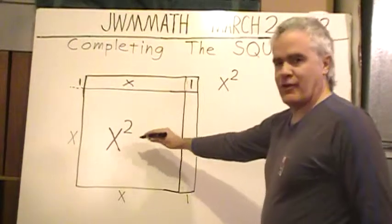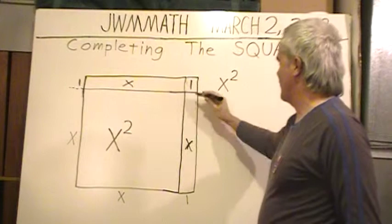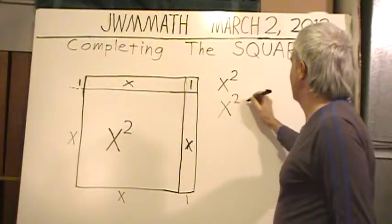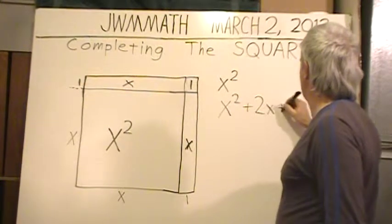The length of the rectangle is the same as the length of the side of the square, which is x. So I am going to call this x, and I am going to call this length 1. And that is a side of length 1, and this has a length of x.